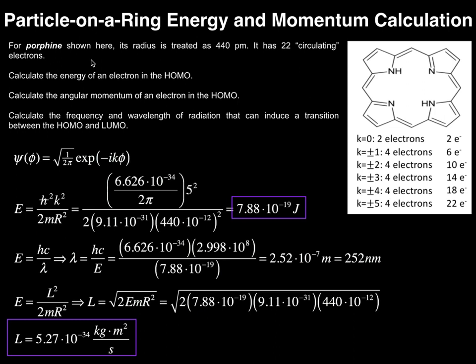Here's a problem that a lot of people have trouble with, and the reason is they don't give you the value of K, your magnetic quantum number. We're going to calculate energy and angular momentum for this molecule shown here, which is porphine. This is a derivative of a biological molecule called heme. For porphine, its radius is treated as 440 picometers, and it has 22 total circulating electrons.